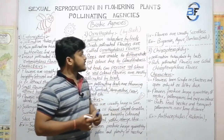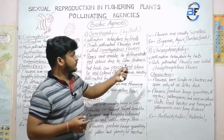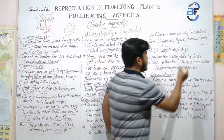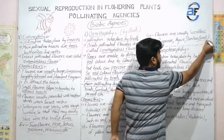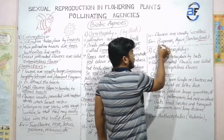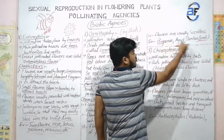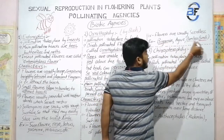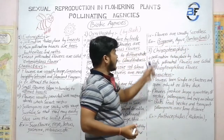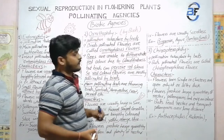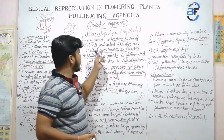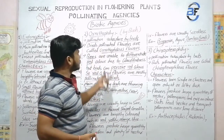The most common examples of Ornithophily are Agave and Bombax — it is one of the best common examples — and Bignonia. These two, Bignonia and Bombax, are your common examples of Ornithophily technique, which is pollinated by birds.